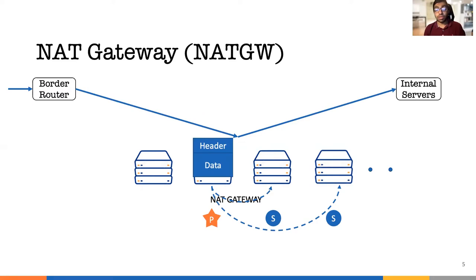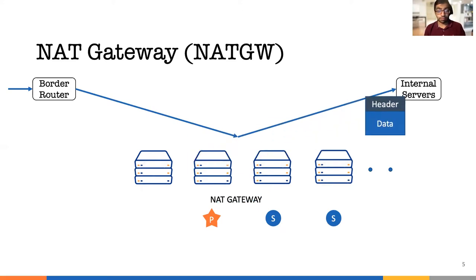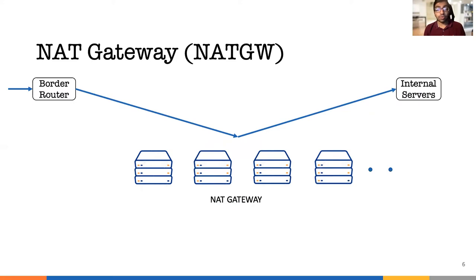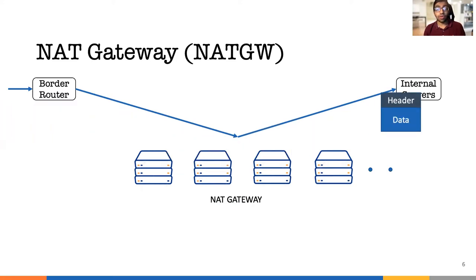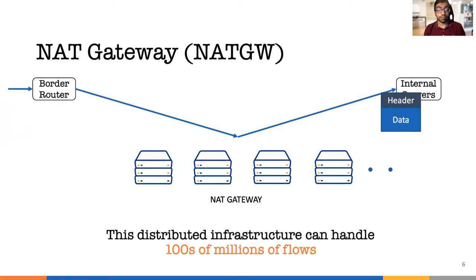After becoming the primary, the first NatGateway updates the header for internal forwarding and sends it to the correct internal server. For all subsequent packets in the flow, NatGateway updates the header and forwards it to the correct internal server. Together, this distributed infrastructure allows it to handle hundreds of millions of flows in the data center.